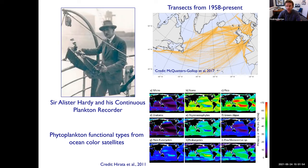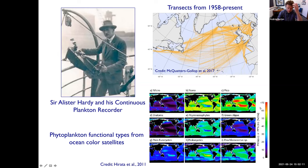There are also satellite algorithms for estimating plankton functional types from space. I show here Hirata 2011, where the different colors show the relative abundance of different kinds of phytoplankton — here the colors are the percent of total chlorophyll.